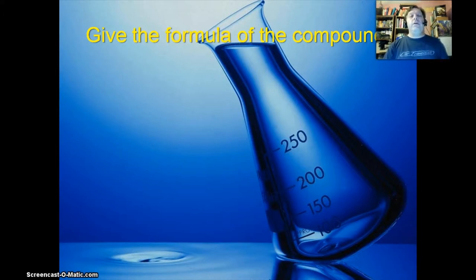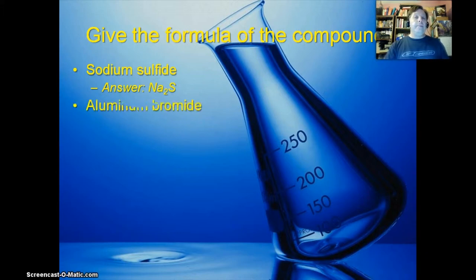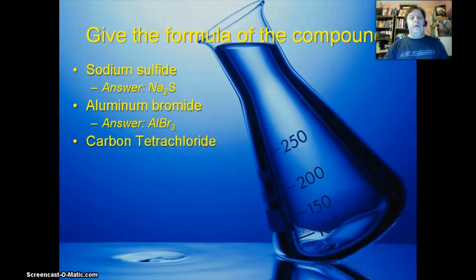We're going to name a bunch of formulas and you give me the formula for the compound. Sodium sulfide, sorry about that I was a little too quick on the draw. That's Na2S. I promise to be a little slower for the next ones. Aluminum bromide: AlBr3. Carbon tetrachloride: CCl4.